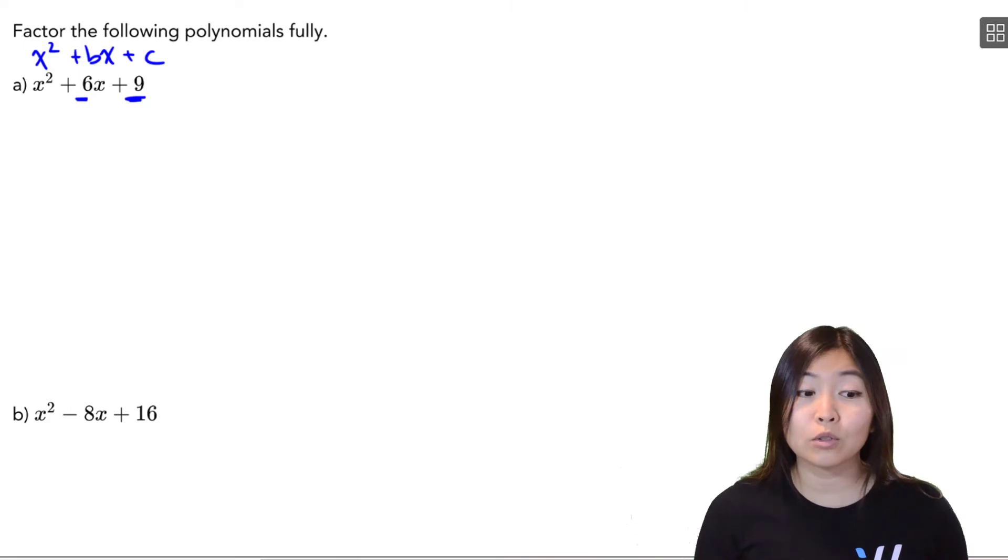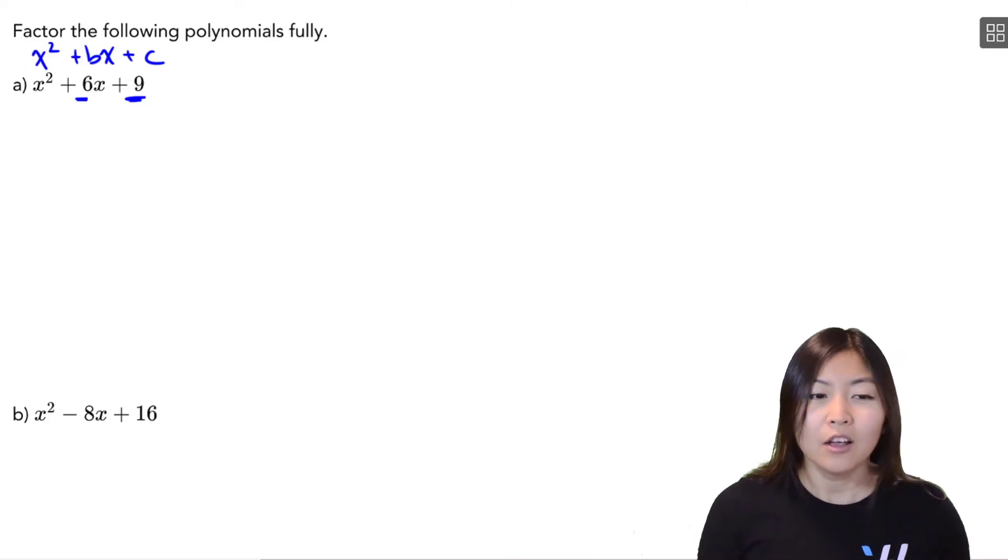But I'm actually going to recognize this as something else. Notice that we do have an x squared, so I'm going to call that a squared, where a is x. And notice that the last constant term is 9, which is also a perfect square. That is just b squared, where b is 3, because 3 squared is 9.